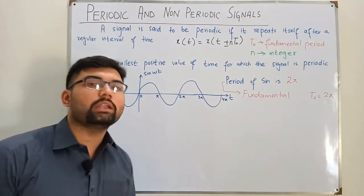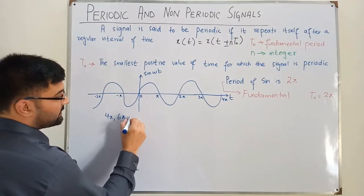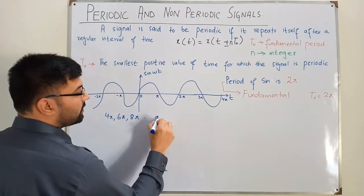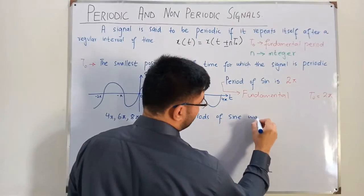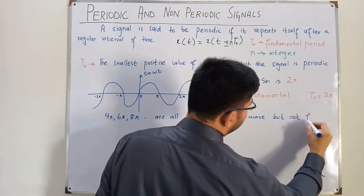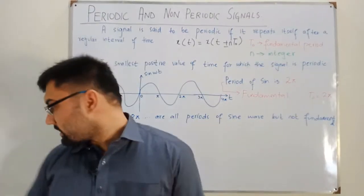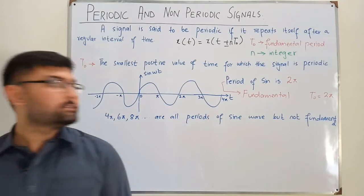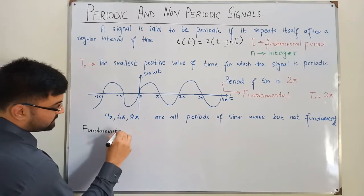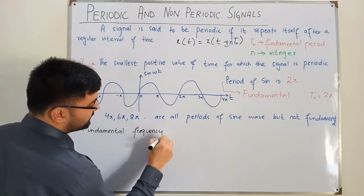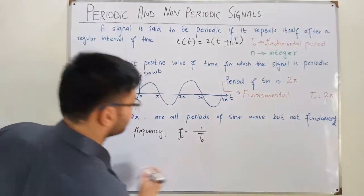4π, 6π, 8π, etc. are all periods of the sine wave, but not the fundamental period — we have only one fundamental period, and that is T₀ = 2π. The fundamental frequency f₀ = 1/T₀, that is, one over the fundamental time period.